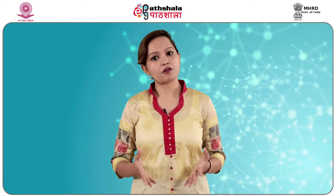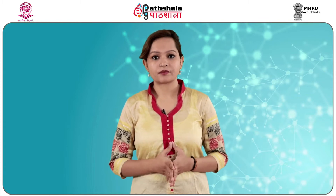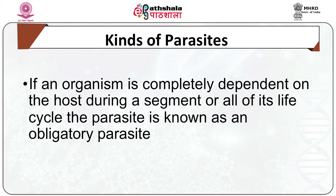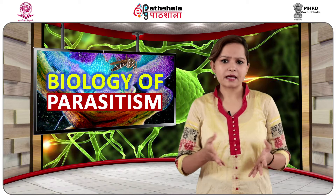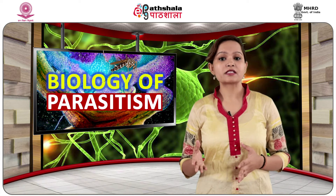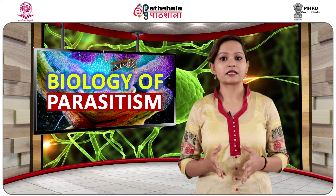Depending on the mode of survival of the parasite, parasites may be divided into the following types. Obligate parasites are those which cannot live without their host. An important process of their life — for example, nutrition or reproduction — is dependent on their host. For example, mosquitoes feed on blood, which is essential for their egg laying.